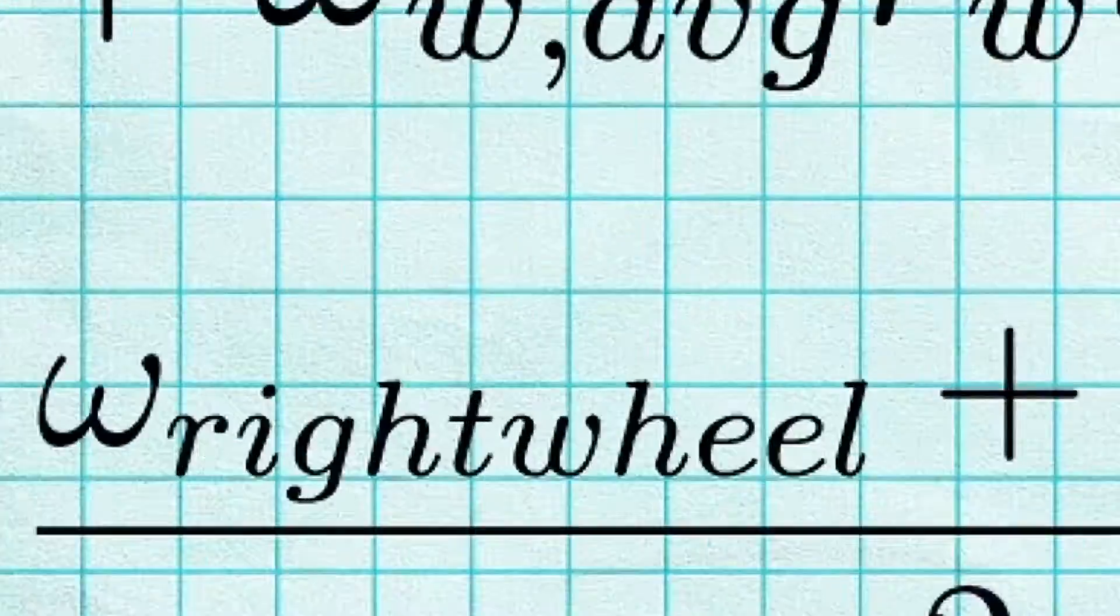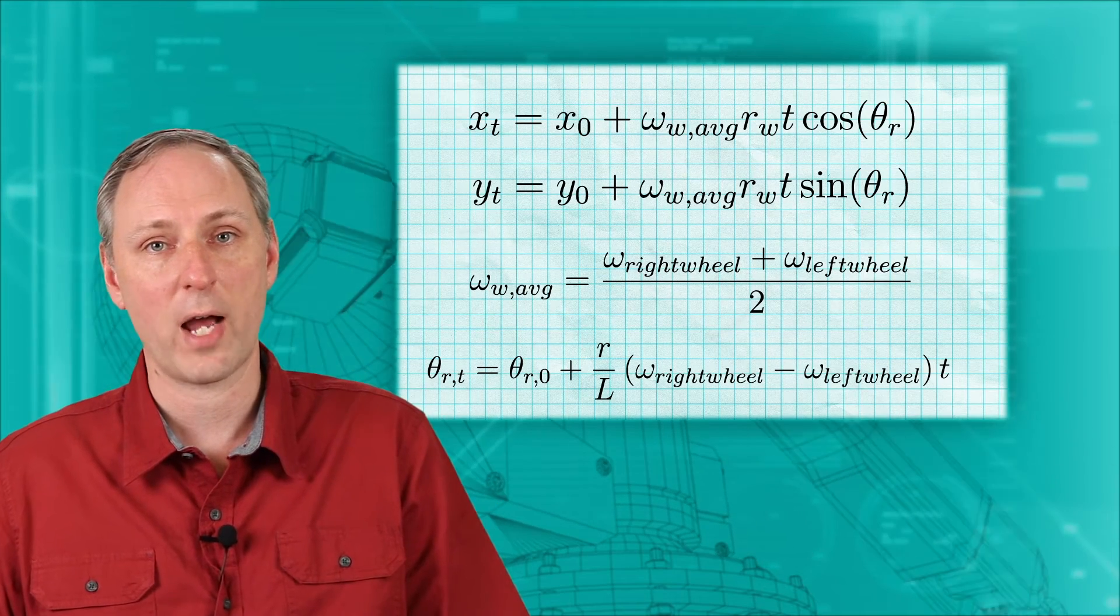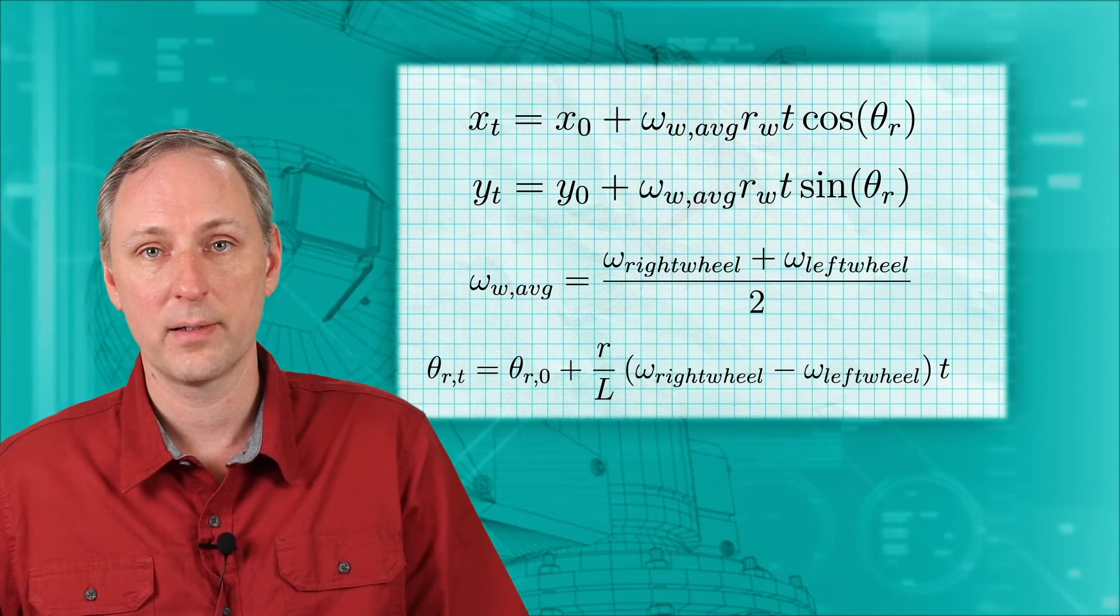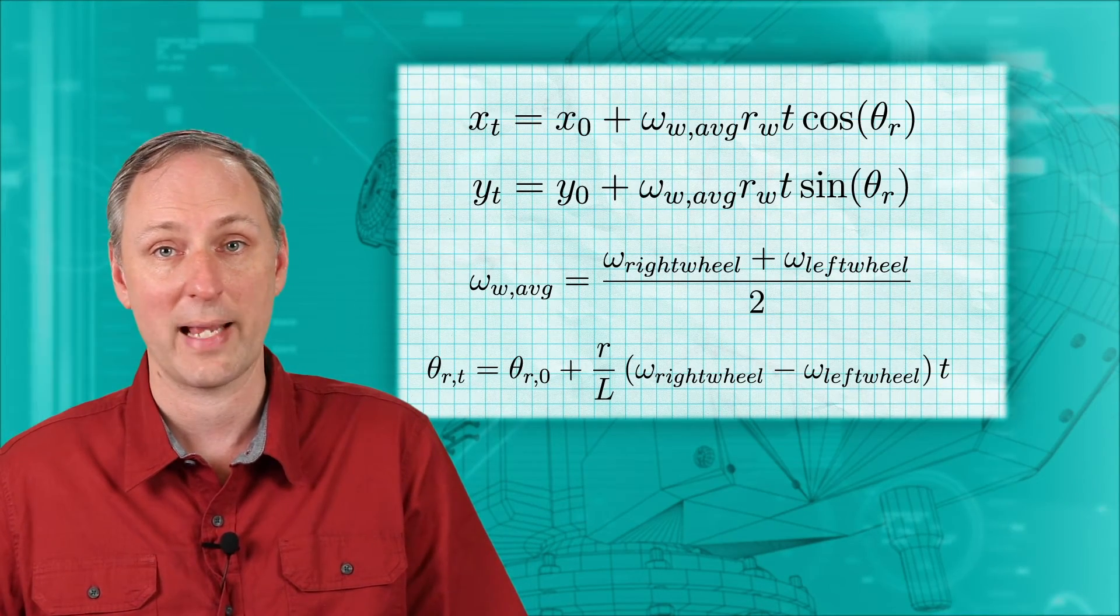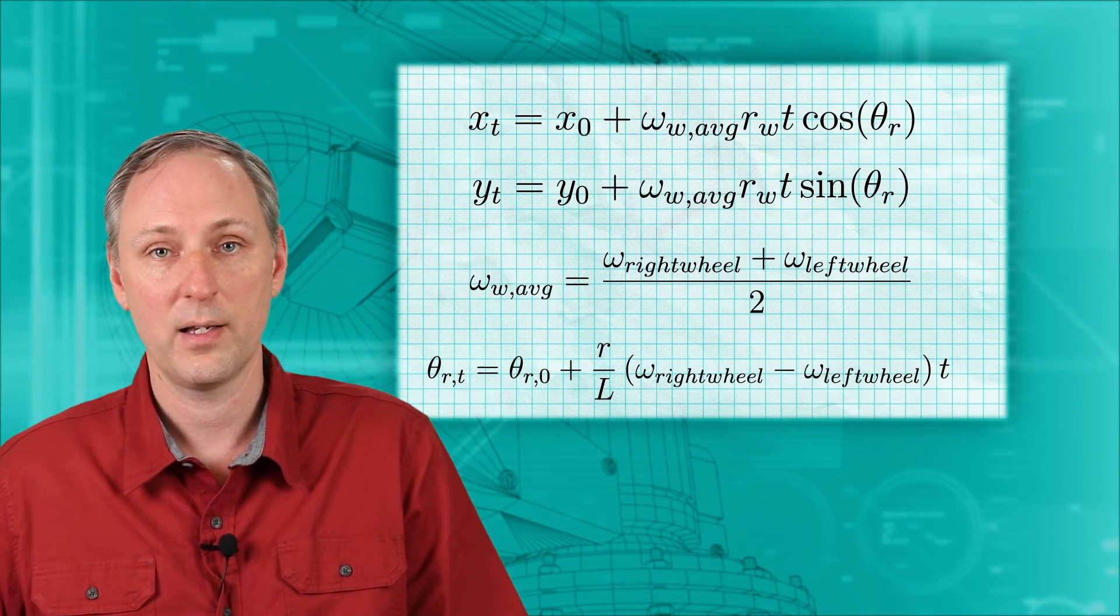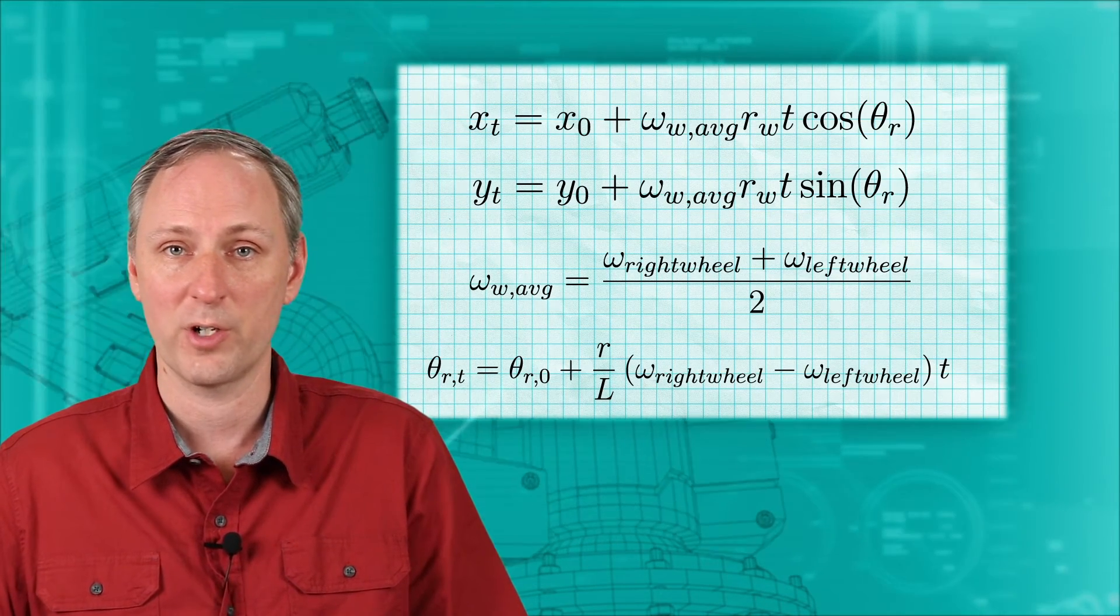In this session, we have explored how we can model a robot's motion for a simple differential drive wheeled or tracked robot. We have derived the equations for determining our position and orientation based on the commanded wheel speeds. Now a robot can determine where it will end up before it has even started to move.